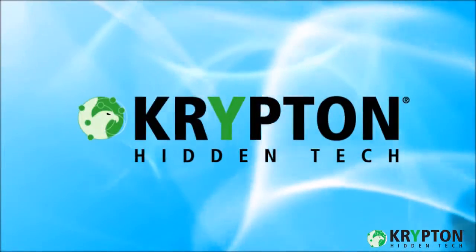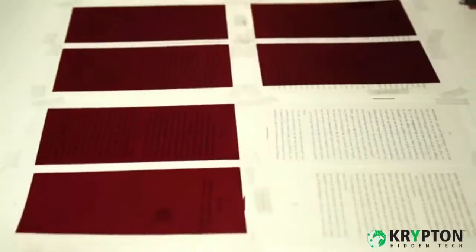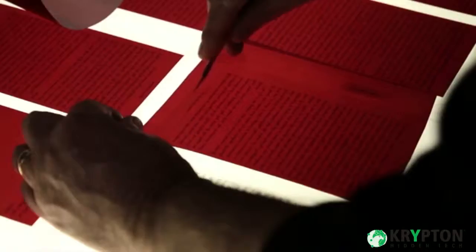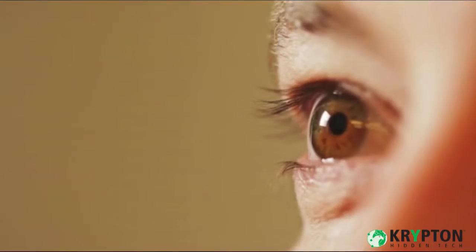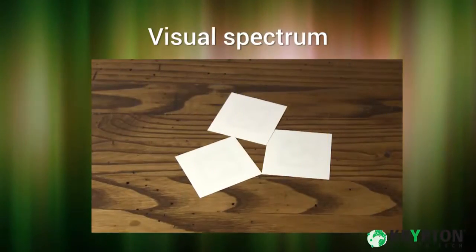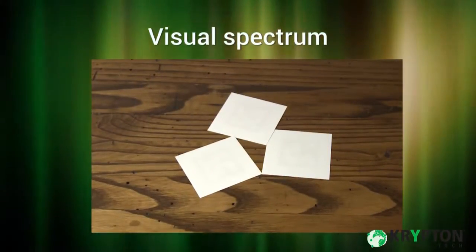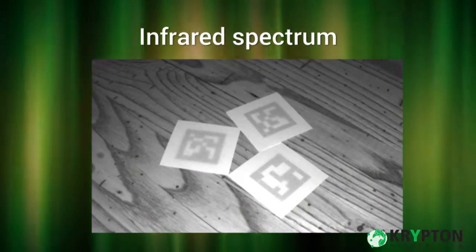Krypton, the hidden technology. Krypton technology has developed a method of producing graphics that display information on two levels, where the first is seen in the visual spectrum while the other in the infrared spectrum.